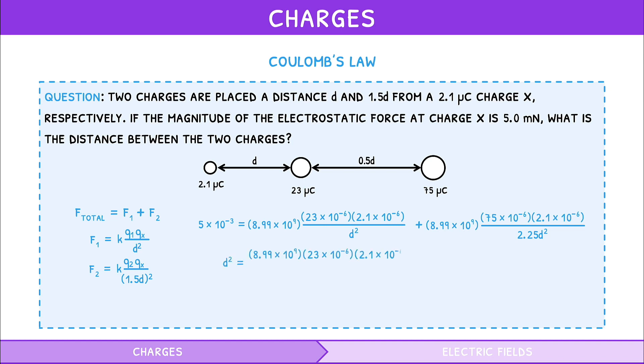Then, both sides are multiplied by d squared to remove the denominator. Simplifying the right-hand side and then taking the square root of both sides gives the value of d. Dividing this by 2, we get the distance between the two charges, which is 7.3 metres.